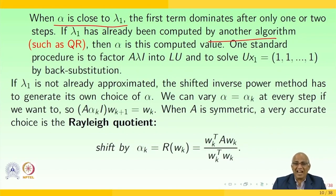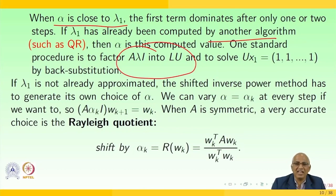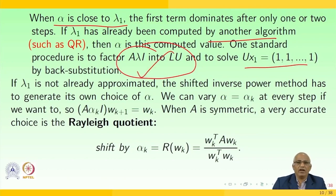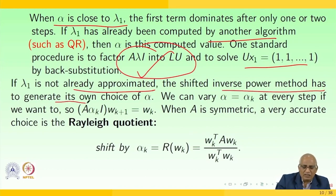The standard procedure is to factorize A − λI into LU, where A is the coefficient matrix, λ is the scalar, I is the identity, L is the lower triangular matrix, and U is the upper triangular matrix. Then solve Ux₁ = (1,1,1,...) by back substitution. If λ₁ is not already approximated, the shifted inverse power method has to generate its own choice of α, varying α = αₖ at every step.